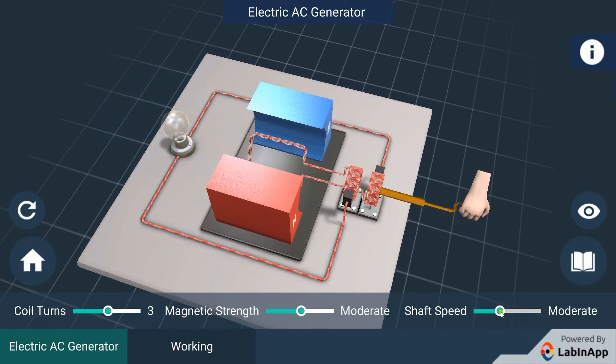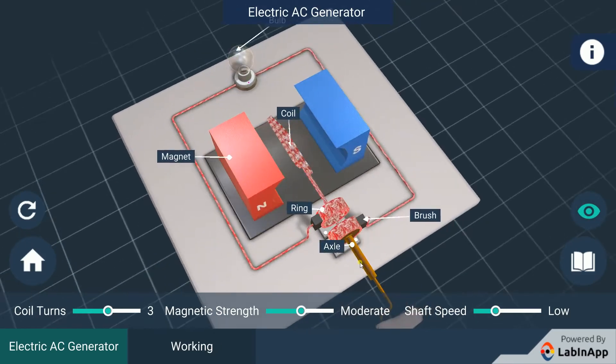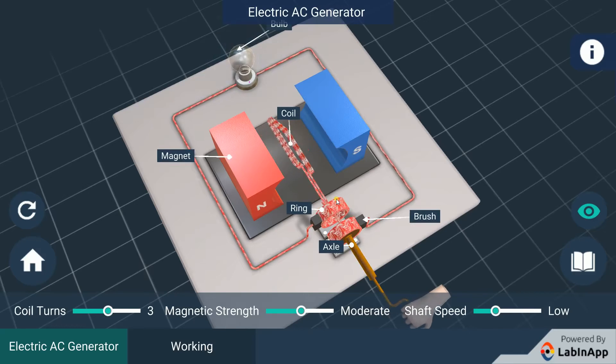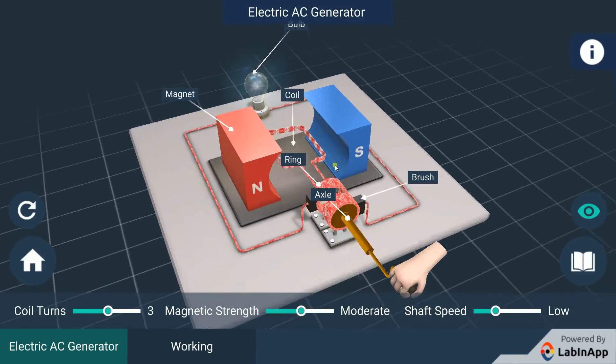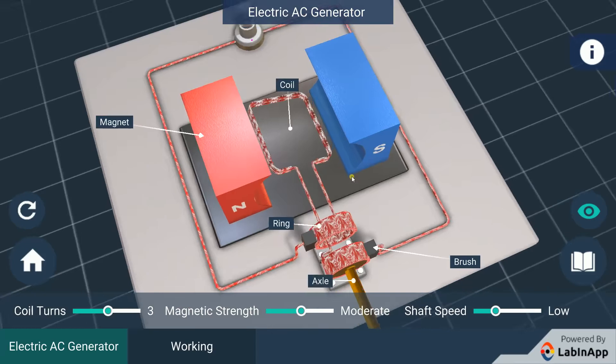An electric generator, as shown, consists of a rotating rectangular coil ABCD placed between the two poles of the permanent magnets.